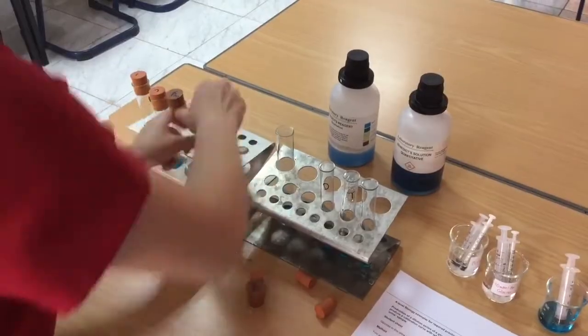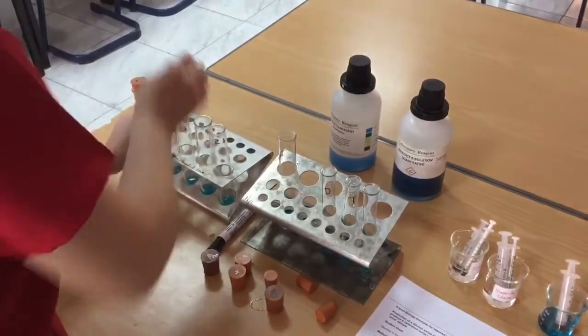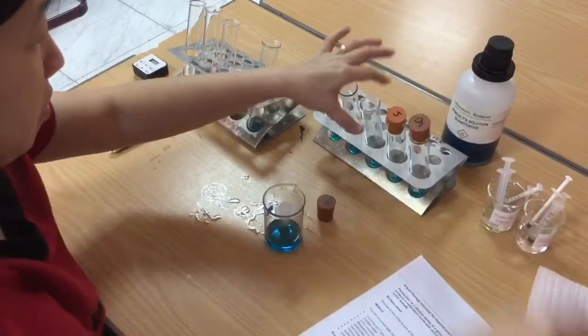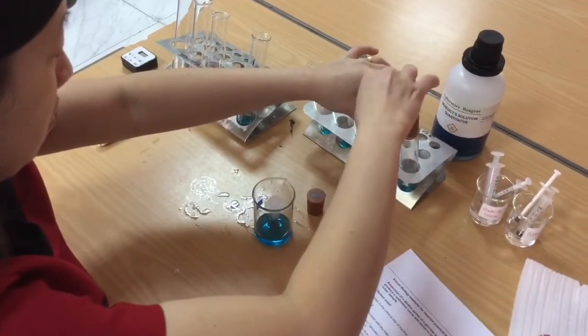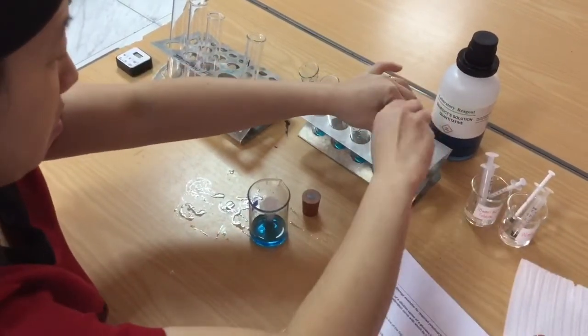In each, I've put 2 ml of Benedict's solution. I've put the bung on at the top of each and given them a shake just to ensure that if any glucose solution is spilt down the side of the boiling tube, it's consistent.